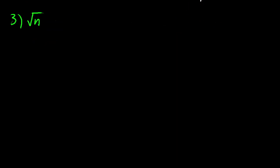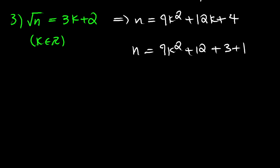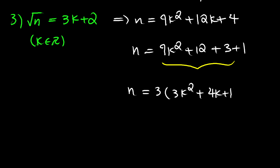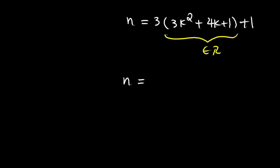For the third case, let's assume that square root of n is in the form 3k plus 2, where k is an integer. Squaring both sides gives n equals 9k squared plus 12k plus 4. Breaking 4 into 3 plus 1 and factoring out a 3 from the first three terms, that part is an integer we can call p. So n equals 3p plus 1.